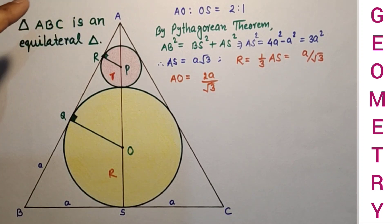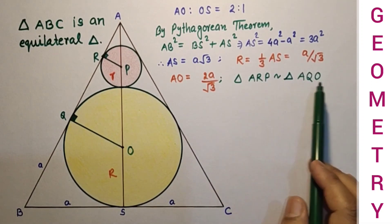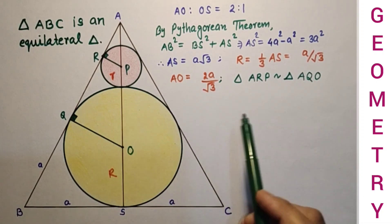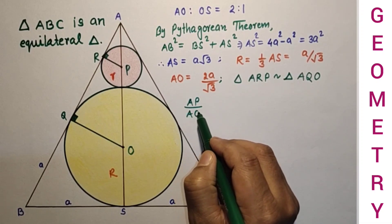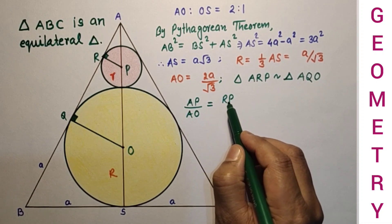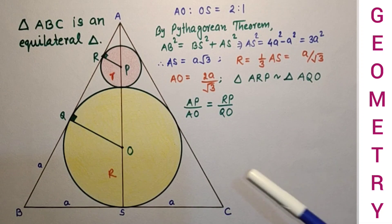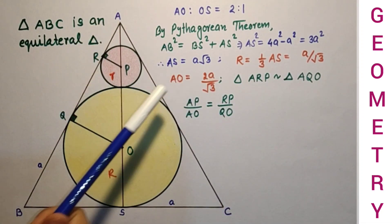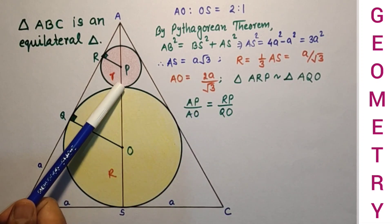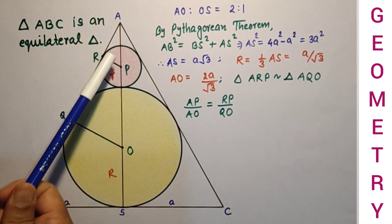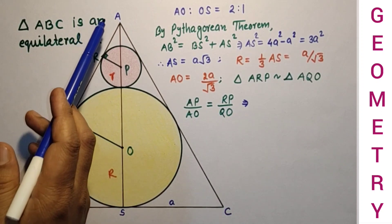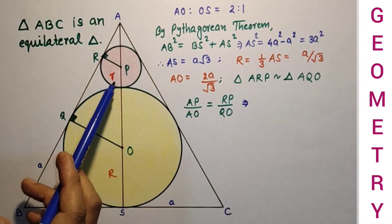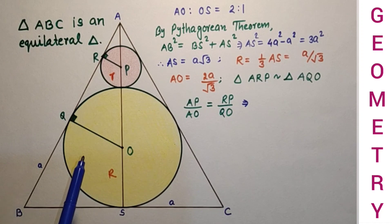In triangles ARP and AQO, these two are similar triangles by the AA test of similarity. So triangle ARP is similar to triangle AQO, and corresponding sides are in the same proportion. We can say that AP over AO equals RP over QO. To find AP, we subtract capital R plus small r from AO: AP equals AO minus R minus r, which gives 2A by root 3 minus A by root 3 minus r, so AP equals A by root 3 minus r.